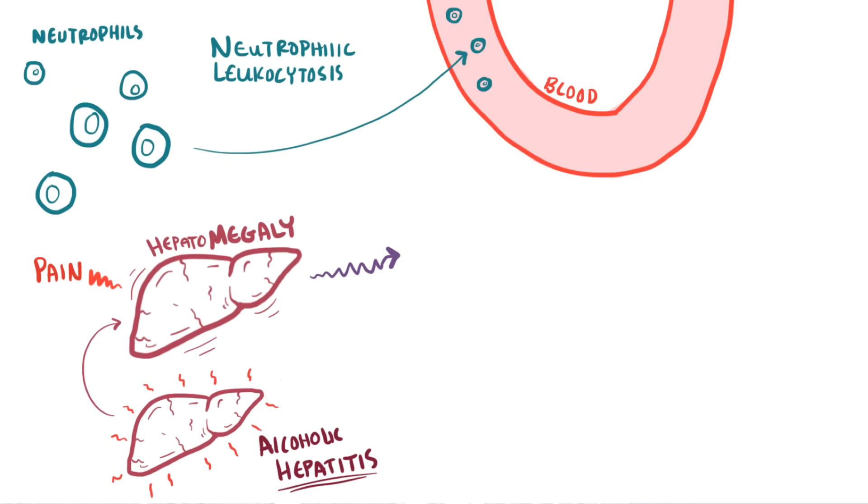The damage done to hepatocytes also results in leakage of liver enzymes like alanine aminotransferase, or ALT, or aspartate aminotransferase, or AST, both types of transaminase. Usually, even though both are elevated, AST will be found to be greater than ALT in alcoholic hepatitis. In addition to these two, serum alkaline phosphatase, or ALP, and gamma glutamyltransferase, or GGT, will also be elevated.